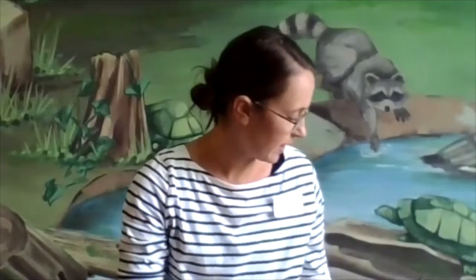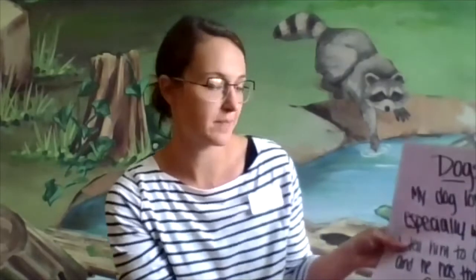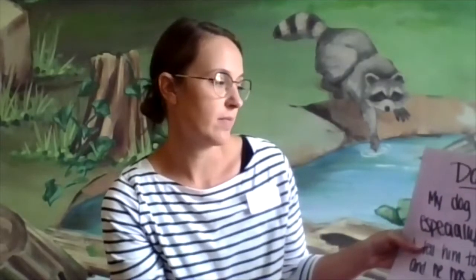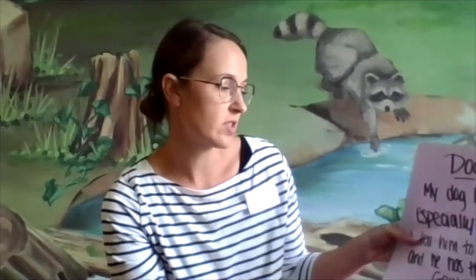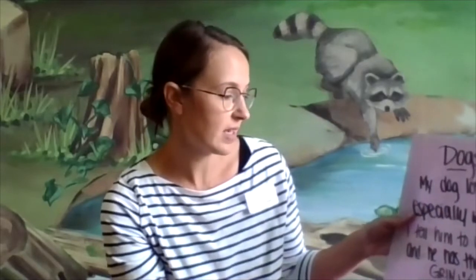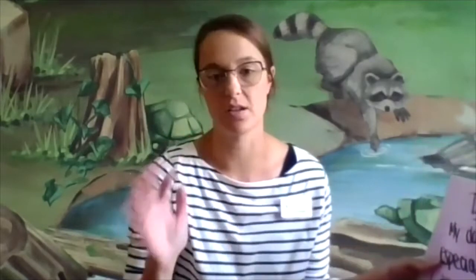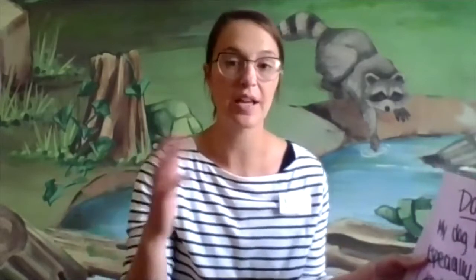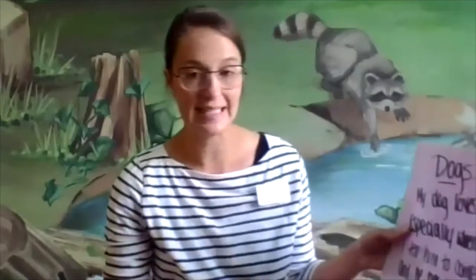Welcome back! Hopefully you had time to write your rhyming poem. I'm going to share mine — I had some inspiration from our hound dogs. My rhyming poem is called "Dogs" and it goes: "My dog loves to bark, especially when it's dark. I tell him to come in and he has the biggest grin." I kept mine short, but you can write it as long as you want. Listen to "bark" and "dark," and "in" and "grin" — that's how rhyming works.